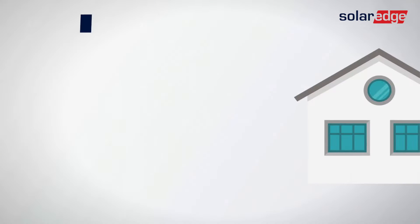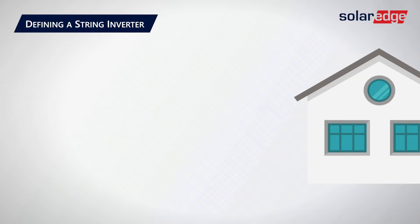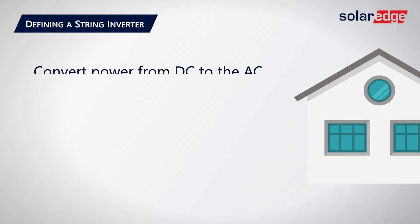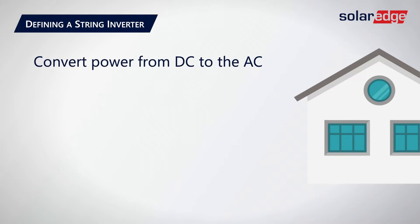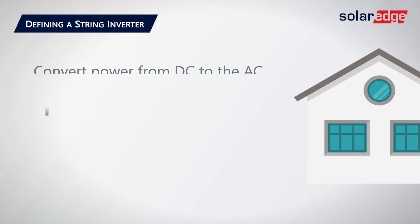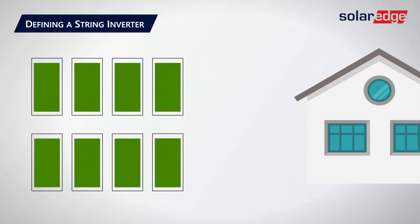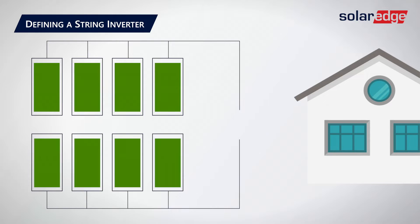Let's start with the string inverter definition. The sole purpose of a string inverter is to convert power from DC, or direct current, from the solar modules to the AC, or alternating current, we use in the home. The solar panels are wired together in a string, and that string is then connected to the inverter, which performs the power conversion.